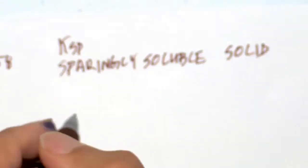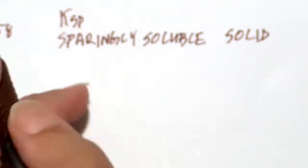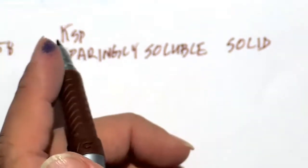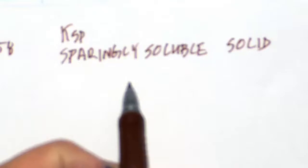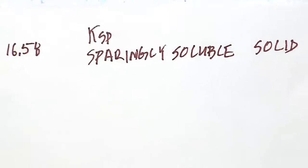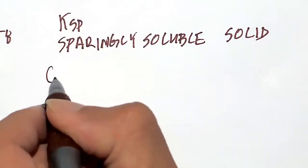As always with Ksp, we're dealing with a sparingly soluble solid. This is a precipitate or a solid that is not 100% solid. It can establish an equilibrium. So the solid is established in an equilibrium with its ions that are going to be in solution.